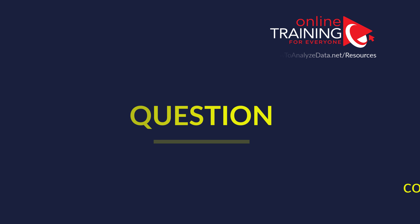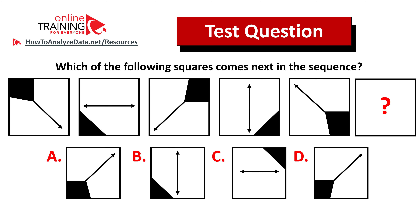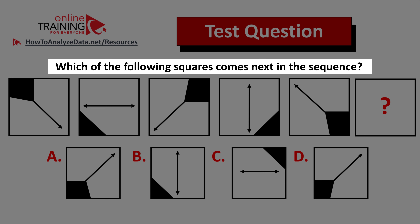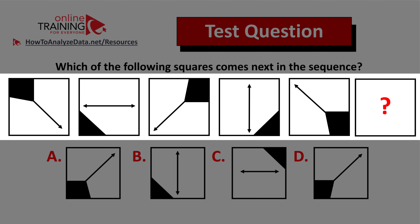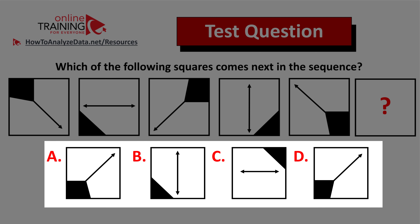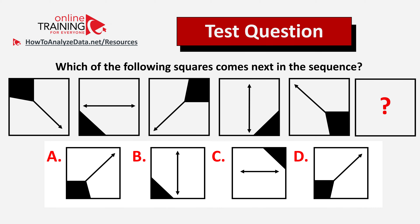Let me share with you a tricky question which tests your pattern recognition, reasoning, and analytical skills. Which of the following squares comes next in the sequence? You're presented with a sequence of six squares and square number six is missing. You need to pick it from four different choices: A, B, C, and D. Always look for patterns. Pause the video for 10 to 15 seconds to see if you can come up with the solution. Did you figure out the answer? Let's solve this challenge together.